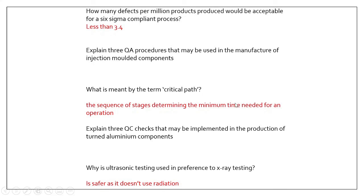Here are the answers. How many defects per million products would be acceptable for a Six Sigma compliant process? Less than 3.4. What QA procedures may be used in manufacture of injection moulded parts? Checking moulds are done accurately, checking the process works correctly, checking you've got the right materials, and checking staff are trained. What does critical path mean? It's a sequence of steps to be as efficient as possible, making things take as little time as possible. Three QC checks for turned aluminium components: checking sizes using vernier calipers, checking measurements, checking weight, and checking for material defects. Why is ultrasonic testing preferred over x-ray testing? It's safer as it doesn't use any radiation. If you have any questions, please send a message via Teams or email.